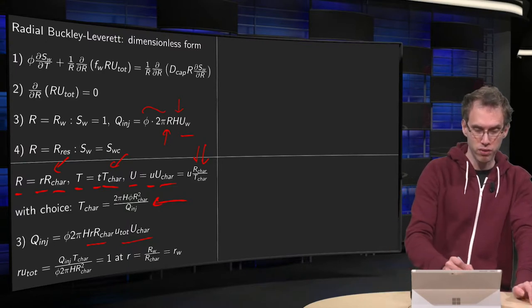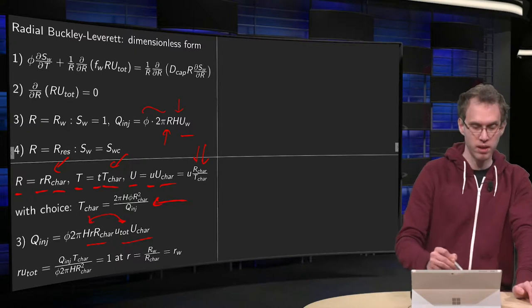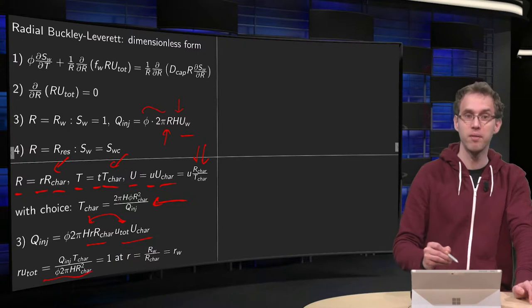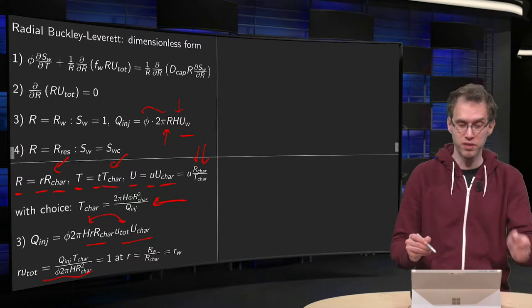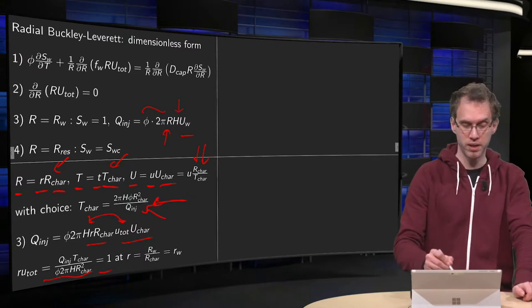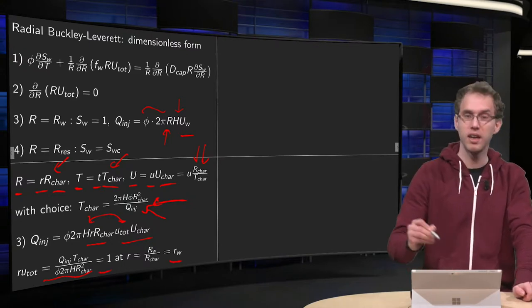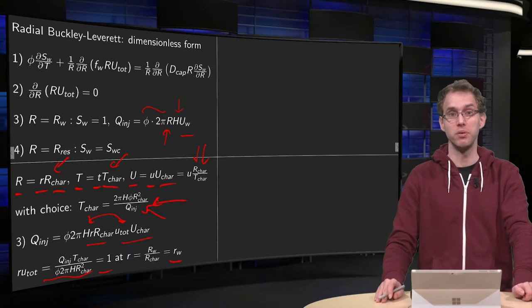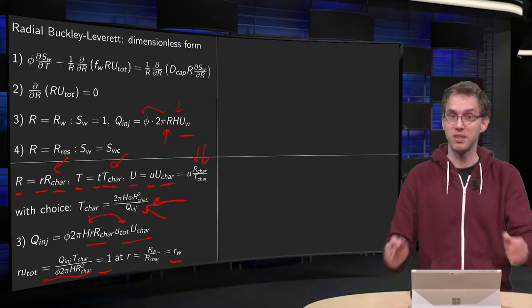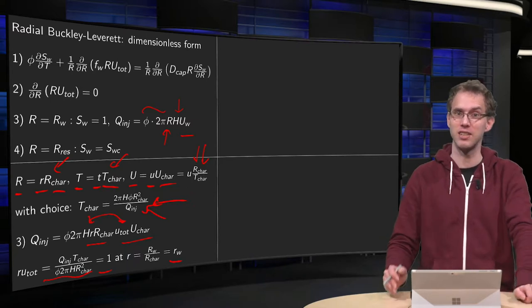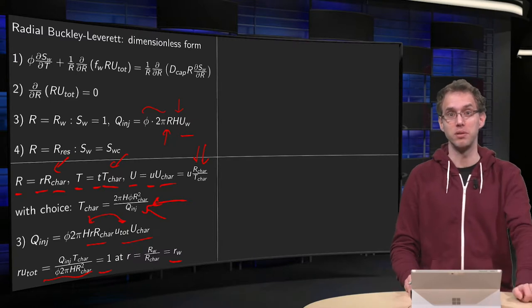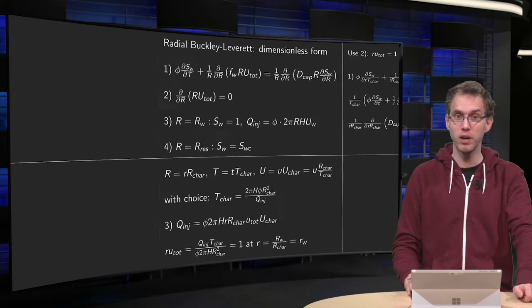Now, we can solve for this R times U-total. It's a lot of mess, it's this mess over here. But due to the choice of T-characteristic, which we made over here, this horrible mess just becomes 1 at R is the injection well. Well, of course, that's how we choose T-characteristic in the first place, in order to get some simplification like this. So, that's for our boundary condition. Our boundary condition becomes R times U-total equals 1 at the well.